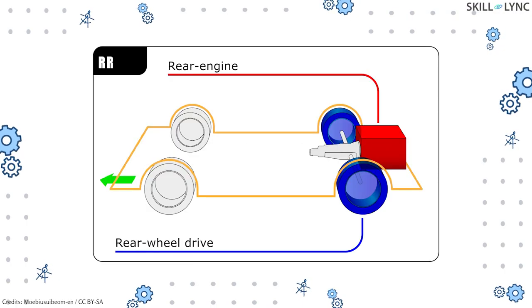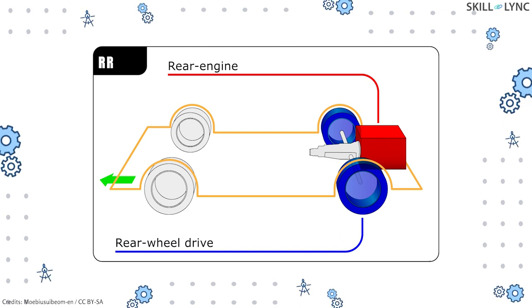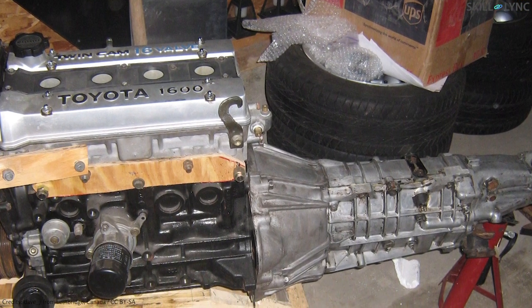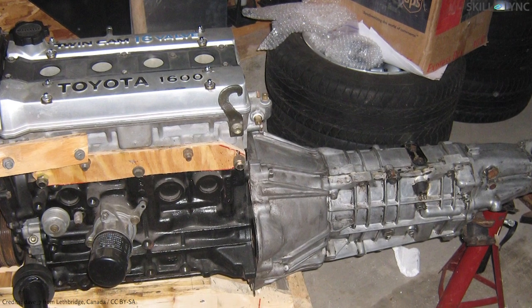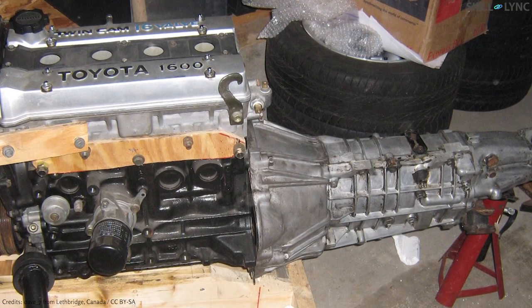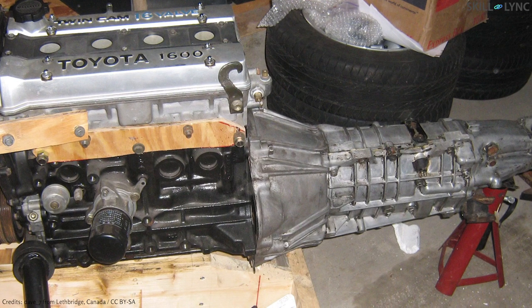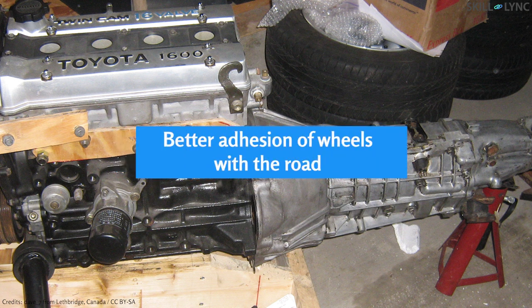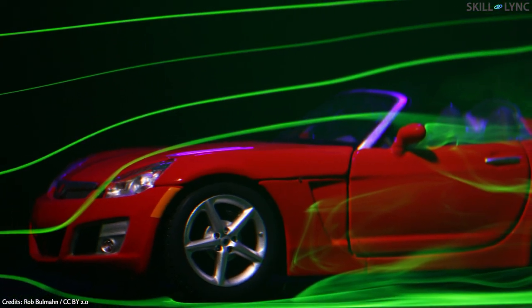Next we have rear engine rear wheel drive vehicles. These vehicles have their engines at the rear side and the drive is also transmitted to the rear wheels itself. Because of the lesser distance between the engine and the drive wheels, the clutch and gearbox are held together in a single unit, and short shafts are used to transmit power to the rear wheels. In this type, the steering mechanism is simple and easier to operate as the front wheels are only used to steer.